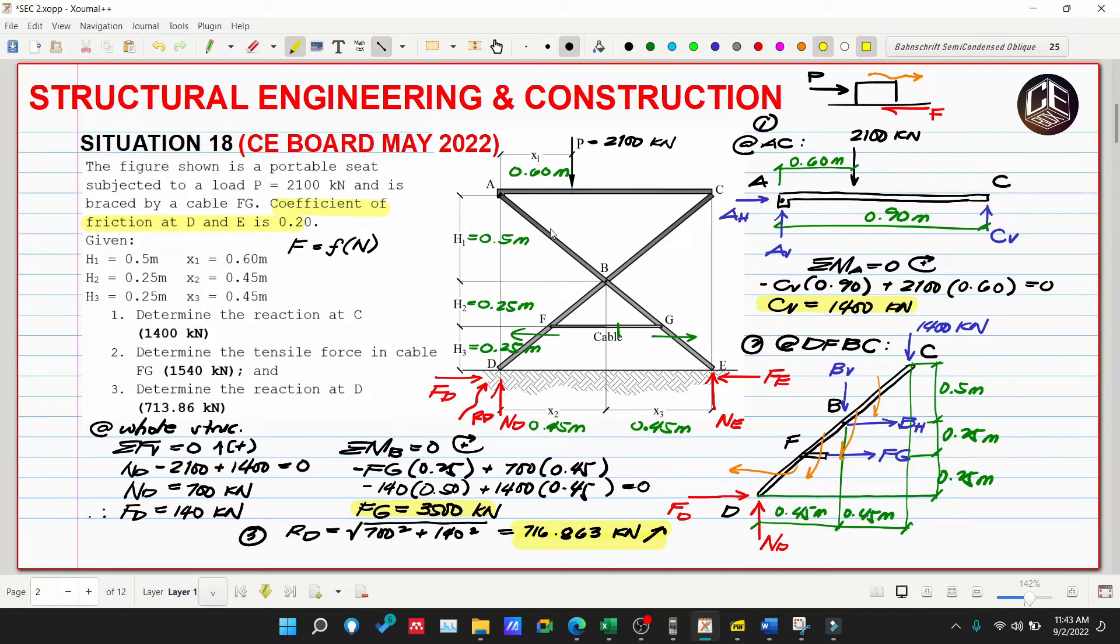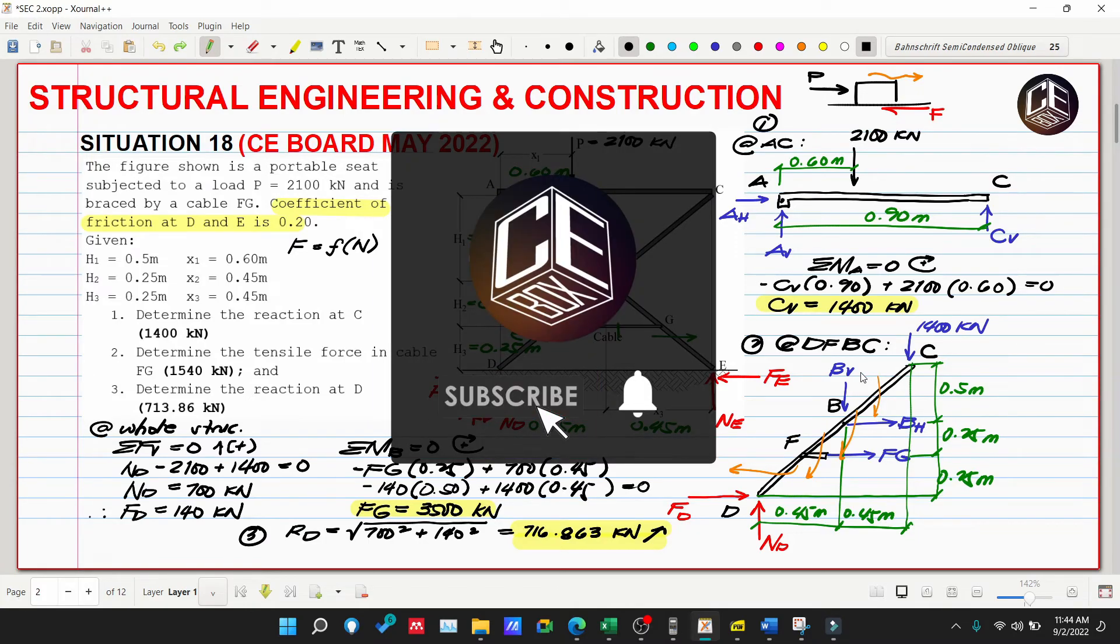Please double-check the solution for number 2, as we believe the friction force should be against the motion of the rigid body. This is Situation Number 18 from CE Board Exam May 2022 for Structural Engineering and Construction. If you learned and enjoyed this video tutorial, please subscribe and hit the bell icon for notifications and updates on our YouTube channel. Thank you for watching, bye.